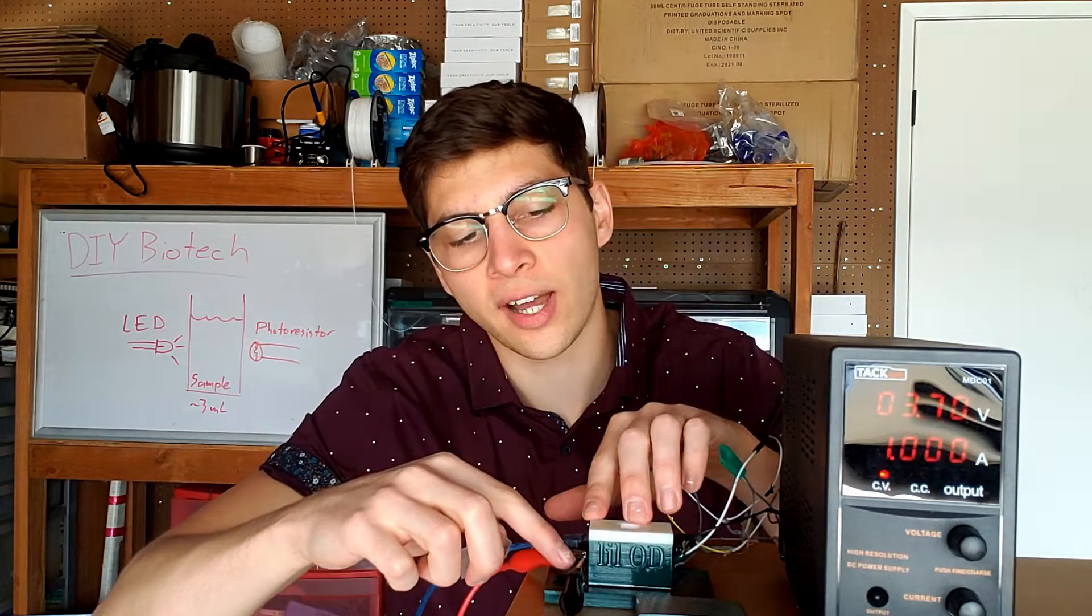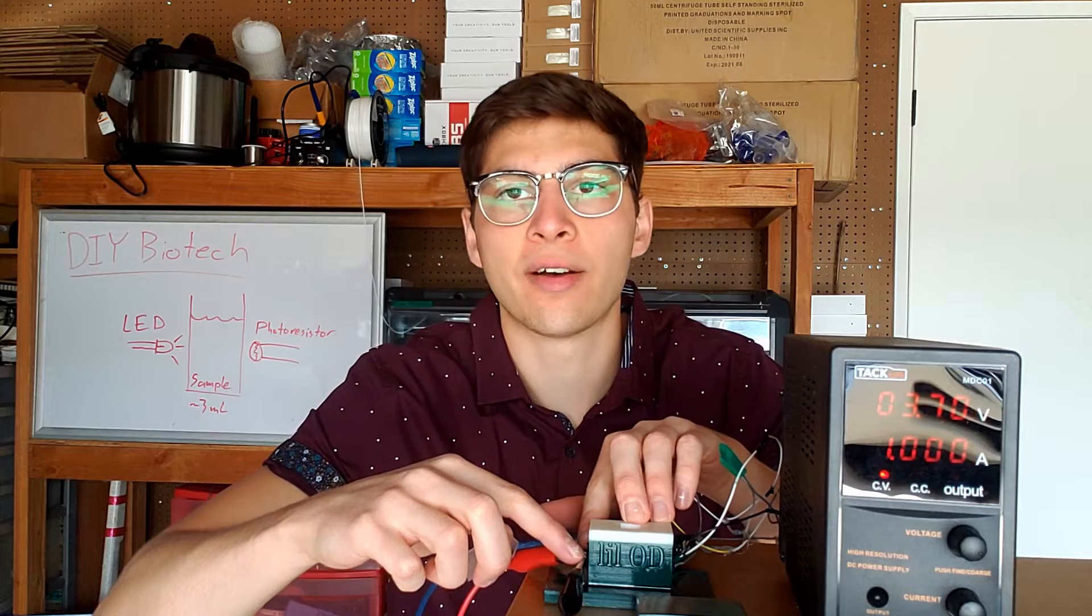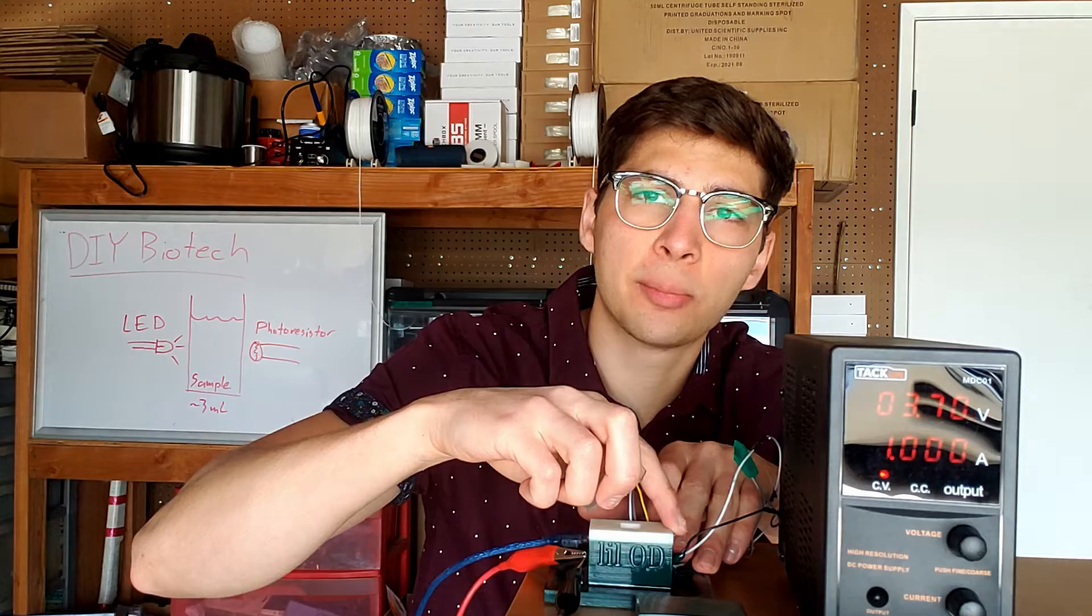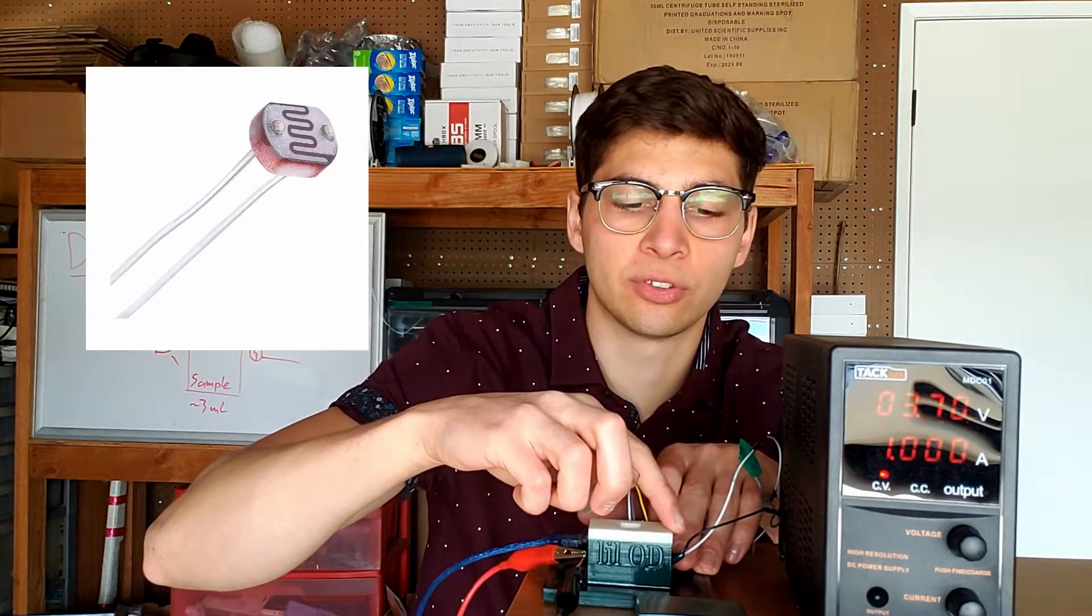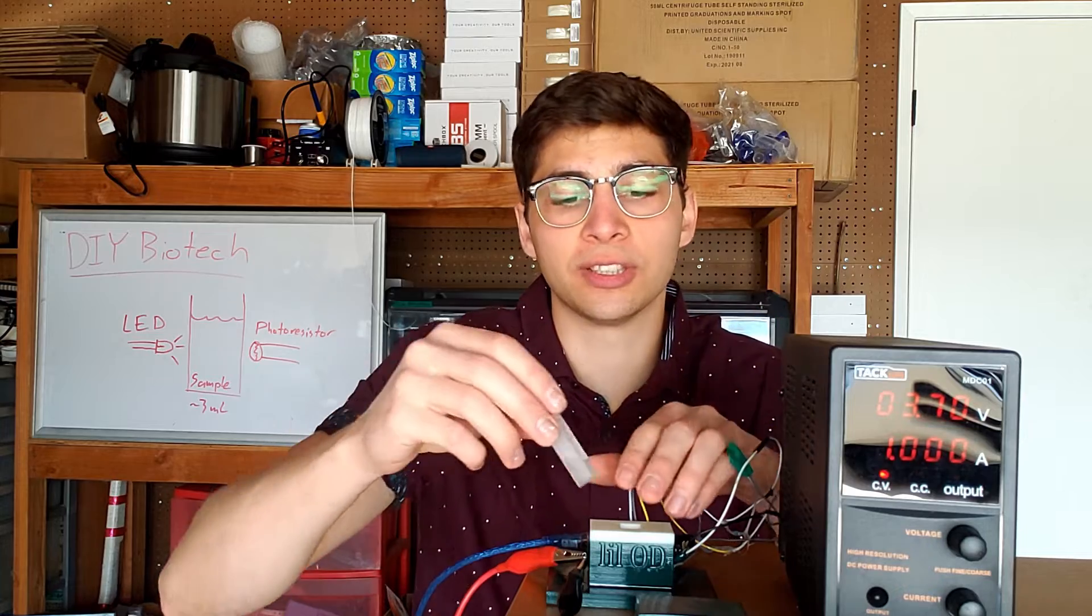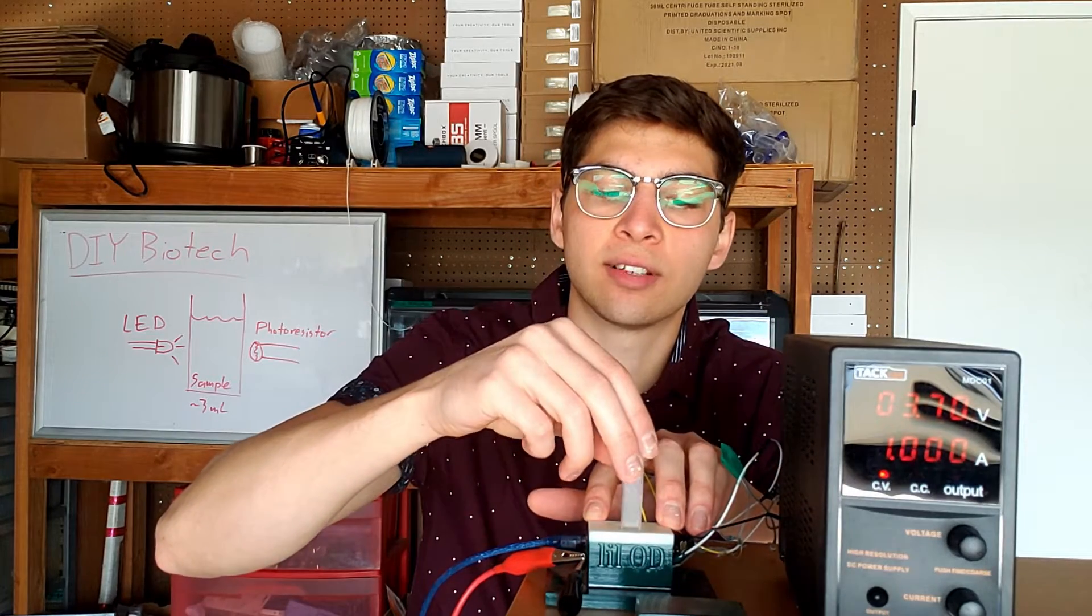On one side of the optical density reader, we have a LED. In this case, I'm using a red LED. And on the other side of the optical density meter, we have a photo resistor. Both of these electronic components are really, really cheap. So this cuvette slots in nicely.